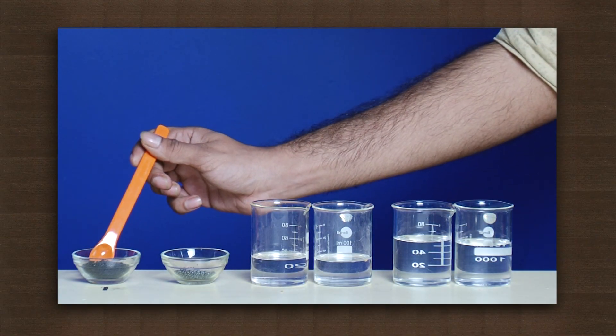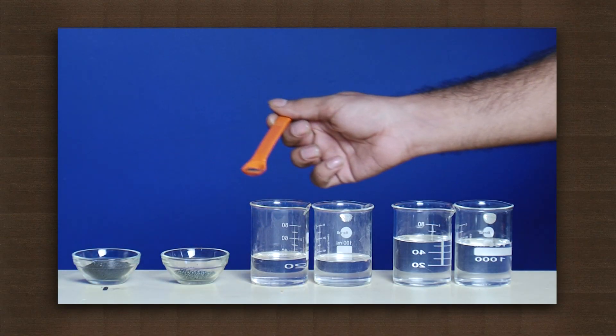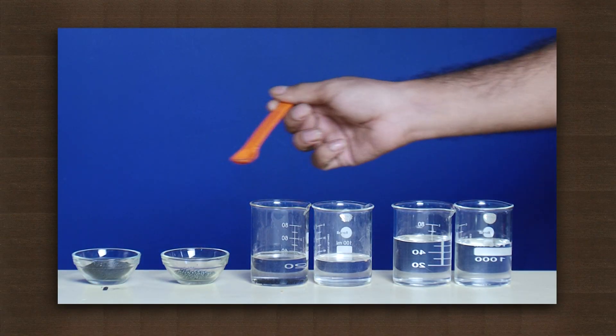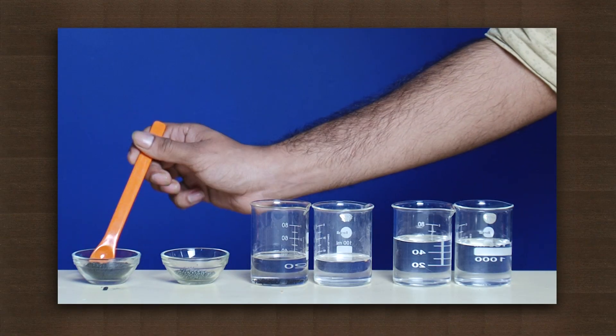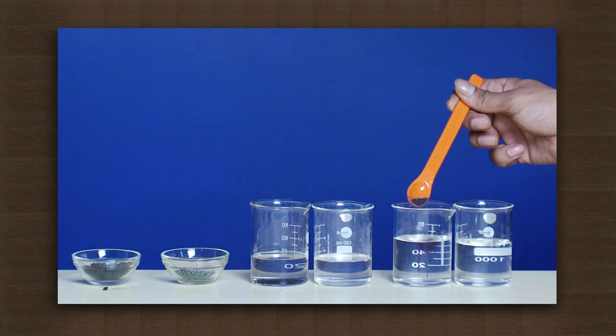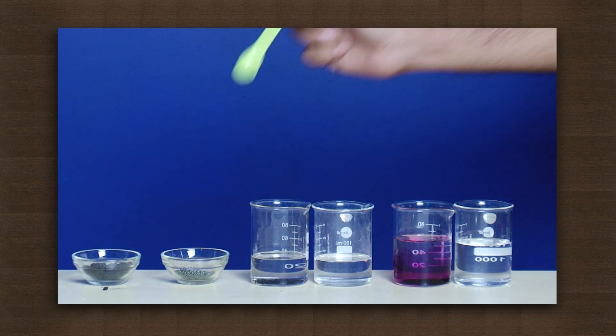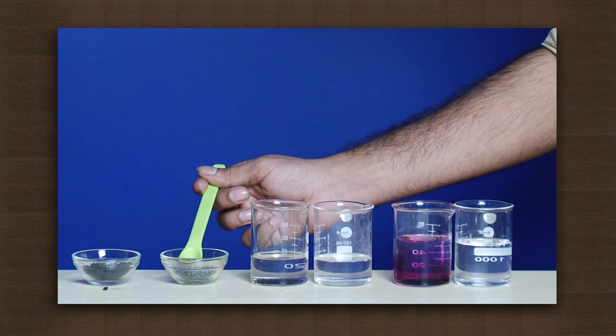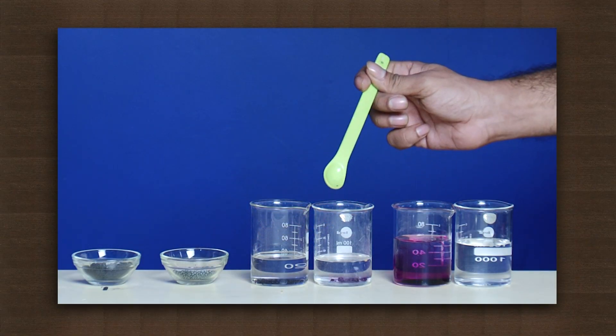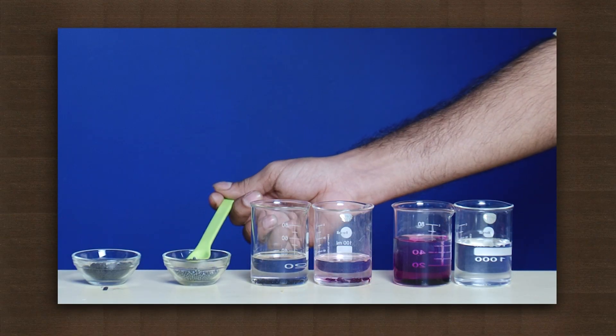Now put some potassium permanganate crystals in the carbon tetrachloride solution. Add some potassium permanganate to the water. Now put iodine crystals in the carbon tetrachloride solution. Add some iodine crystals to the water.